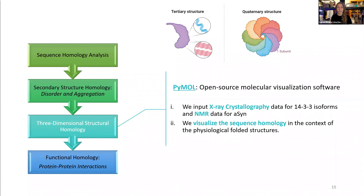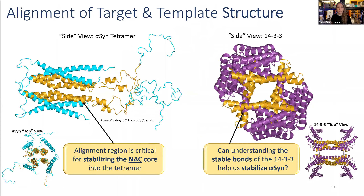We progress to the 3D structure, using PyMOL, an open source molecular visualization software, where we input the x-ray crystallography data for 14-3-3 and the NMR data for alpha-synuclein. The sequence homology region is now shown in gold and aligns to the central core region of both proteins. This means our alignment in the NAC region of alpha-synuclein corresponds to important stabilizing helices at the core of the alpha-synuclein tetramer. The corresponding region in the 14-3-3 tetramer includes important bonds that allow the dimer and tetramer to form. Importantly, this region is involved with the self-assembly of both proteins, indicating the helical tetramer is evolutionarily conserved and could be targeted for drug therapies.